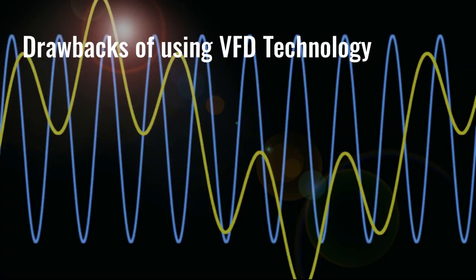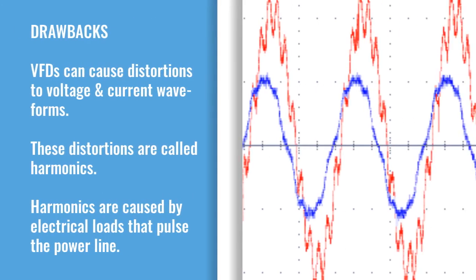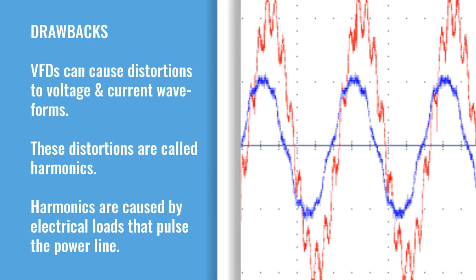Now let's talk about some of the drawbacks of using VFD technology. VFDs can cause distortion to voltage and current waveforms. These distortions are called harmonics, and they are caused by electrical loads that pulse the power line.